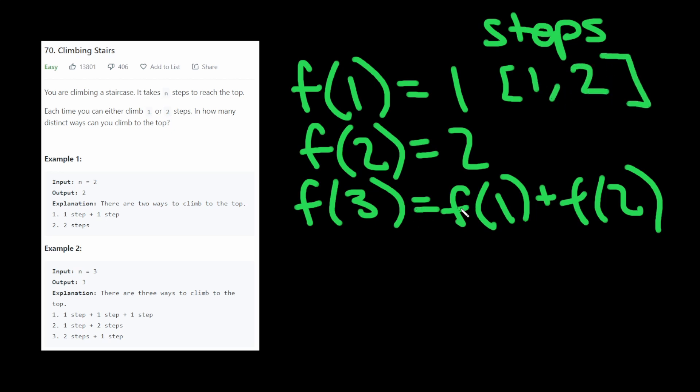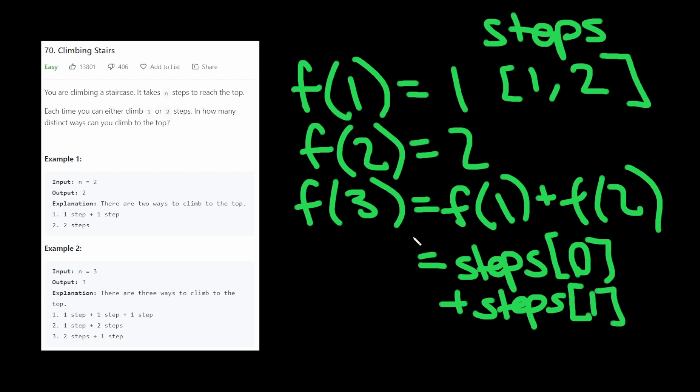And when we get to this three, instead of doing the function call recursively here, all we have to do is check this array here at those indices. So really, this is equal to steps at zero plus steps at one.